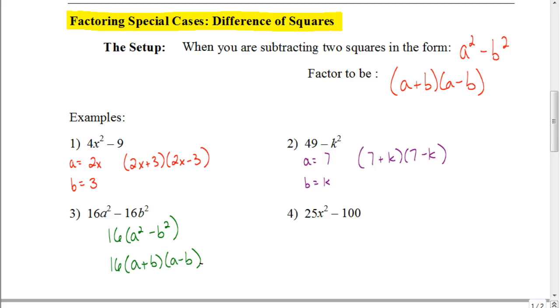So I want you guys to do this last one on your own. 25x² - 100. So again, look for a GCF first. And whether there is one or isn't, factor that down completely. So go ahead and work that one out. Pause the video and hit play when you're ready to check to see if you have the right answer.